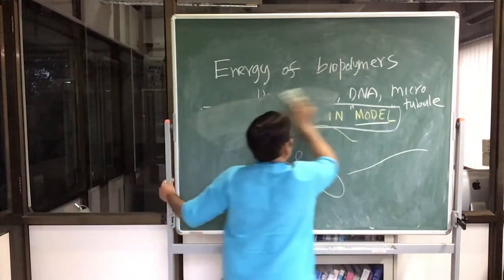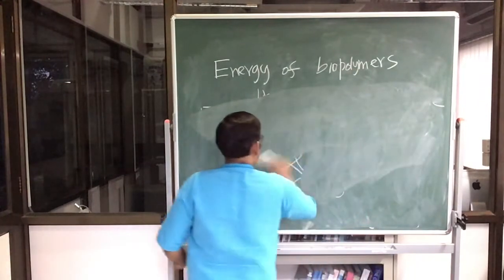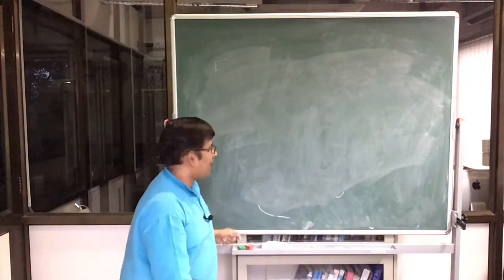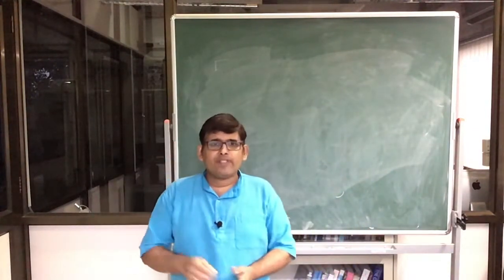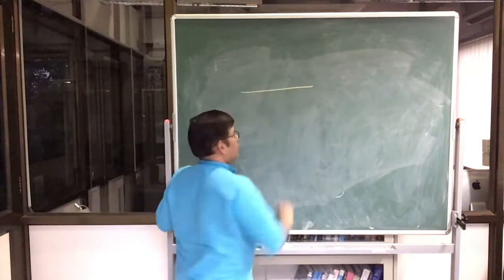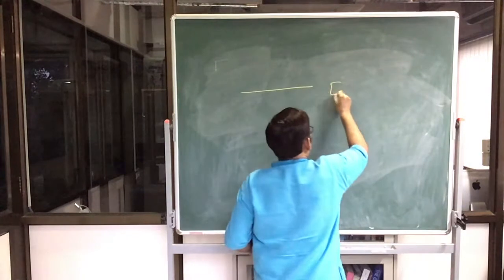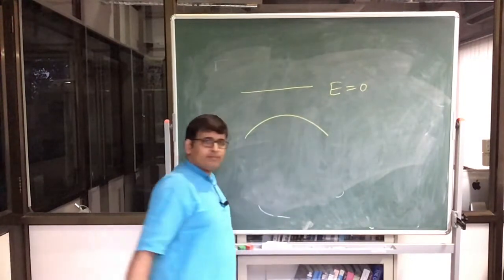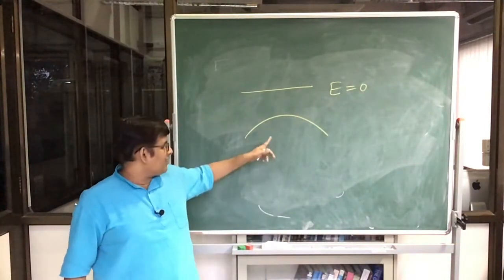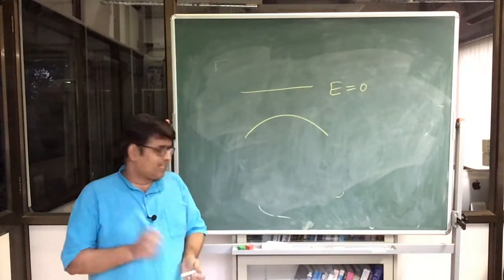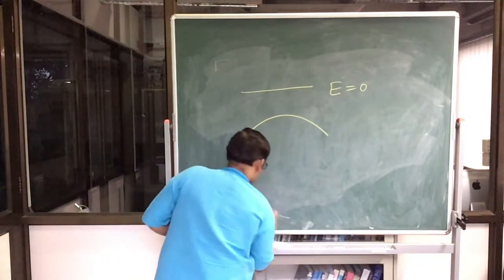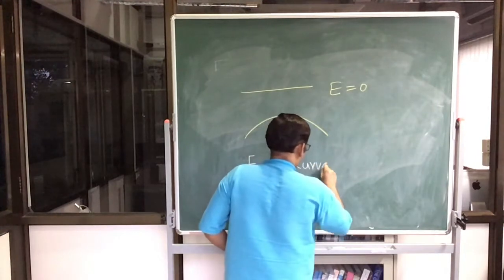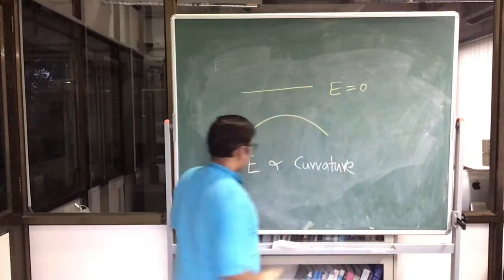Let me quickly specify the model. The model says that if the biopolymer is straight, the energy of this biopolymer is zero. If it is curved, then the energy is proportional to the curvature. That is the idea of this model: energy is proportional to the curvature.